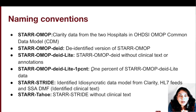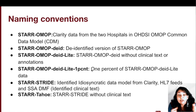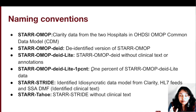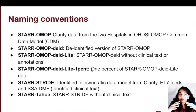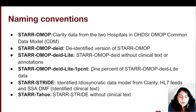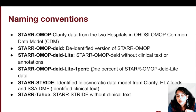Star Stride — many of you have probably used Stride in the past. Star Stride is essentially the identified idiosyncratic data model from Clarity, which was defined here at Stanford and is very Stanford-specific. This data model continues to exist, and both Stride and OMOP are two data models that sit on top of the same raw data, which is the Clarity data from the two hospitals. Star Taho — some of you may have used it in the past — has been deprecated. It was essentially Star Stride without any clinical text, but we're no longer supporting it.